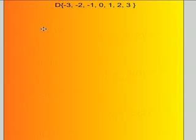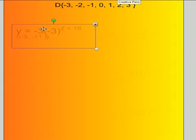So first, you have to plug the numbers into the equation. First, it's y = -3(-3)² + 18. -3 squared is 9. 9 times -3 is -27. -27 + 18 = -11. So you would write this as (-3, -11).